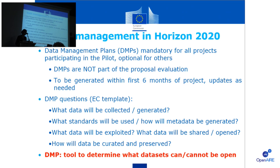The DMP questions — also available in the EC template in Annex 1 of the guidelines — include four main areas: what data will be collected or generated and what standards will be used; how will metadata be generated and what data will be exploited; what data will be shared or opened; and how will data be curated and preserved. The DMP is a tool to determine which datasets can or cannot be opened.